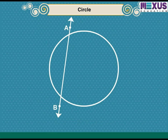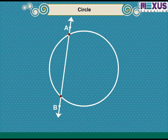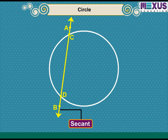Now, for this circle, the line AB and the circle have two common points, namely C and D. Hence, line AB is called a secant of the circle, as it intersects the circle at two points.